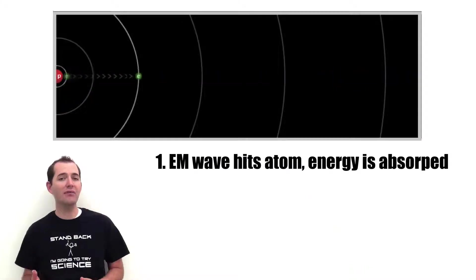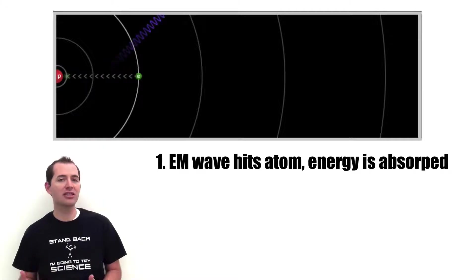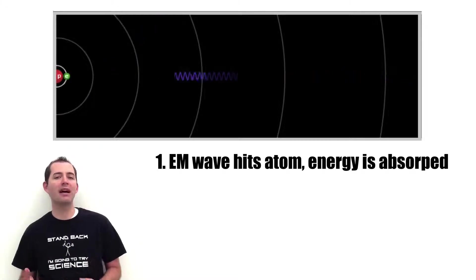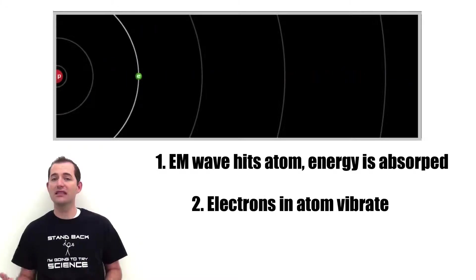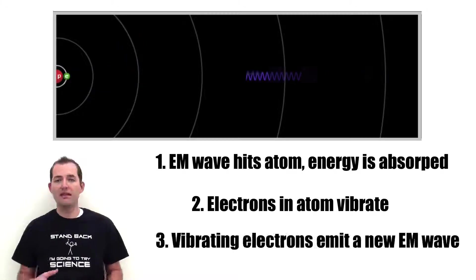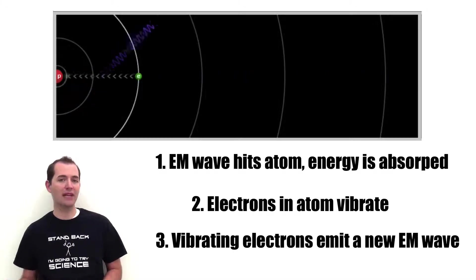How this happens is the EM wave hits an atom and the energy from that wave is absorbed by the atom. This causes the electrons in the atom to vibrate. The vibrating electrons then emit a new wave.